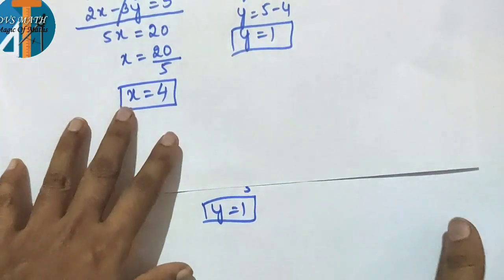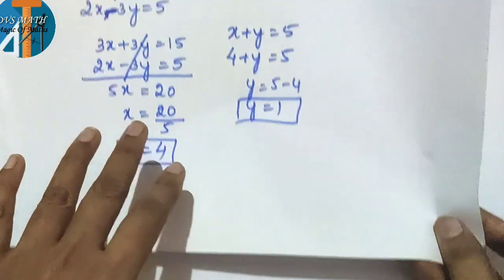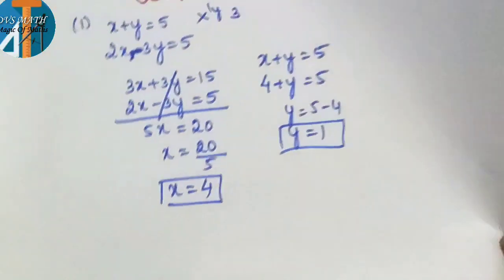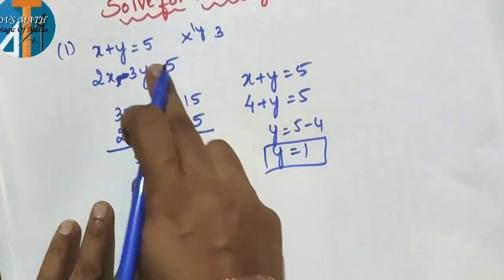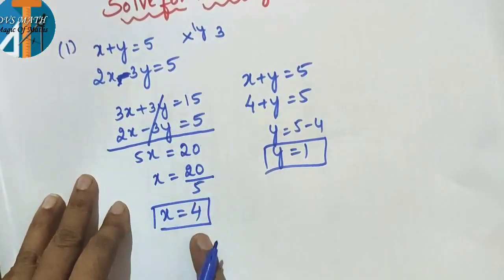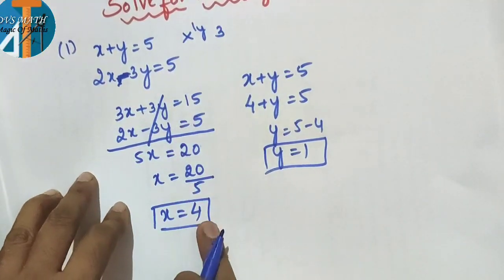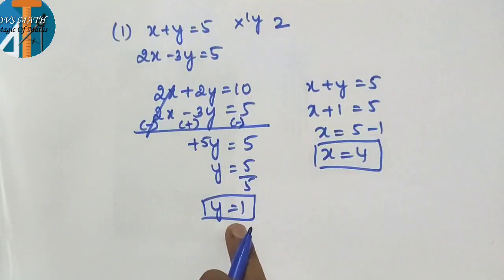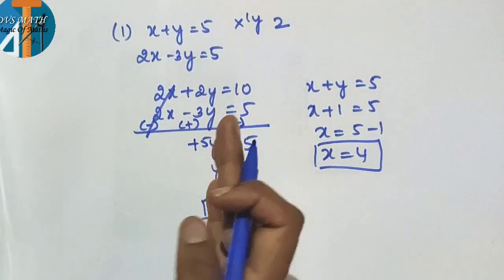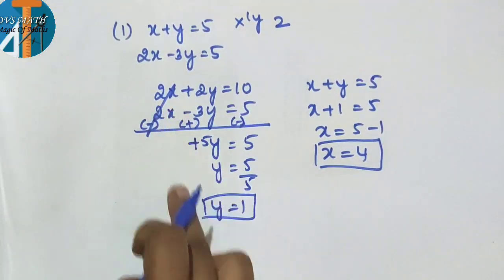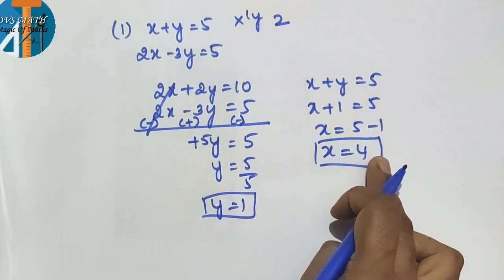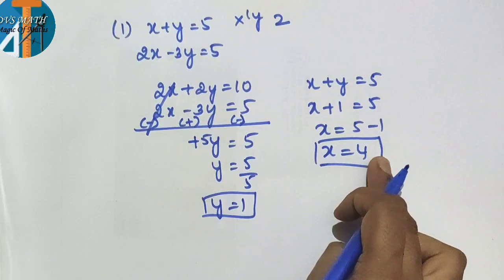Comparing both cases: whether you make the y terms the same or the x terms the same, you get the same answer — x is equal to 4 and y is equal to 1.